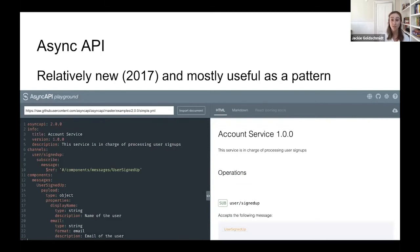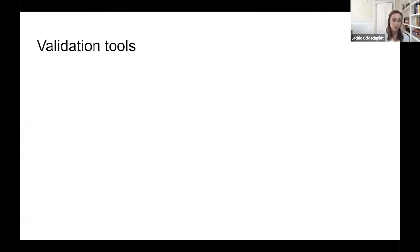AsyncAPI is a pretty new project — a lot newer than Swagger — but I think it's mostly useful as a pattern for thinking through what exactly you expect when building out your data pipelines. Really start to explore the assumptions you're making about the data, because the fewer assumptions you make, the tighter your data pipelines and the higher the quality of the data moving through them. Validation tools are what will make sure that in code you are asserting you're getting valid data every step of the way.